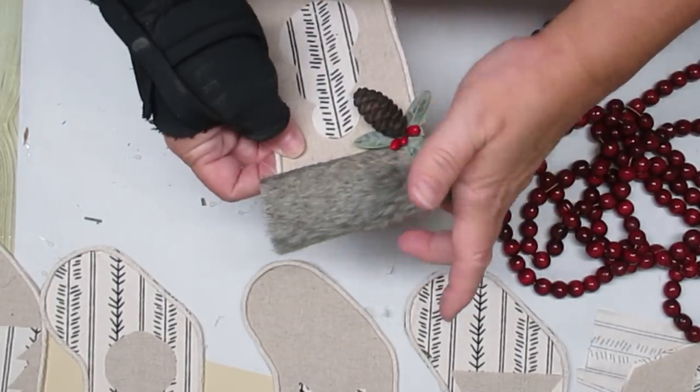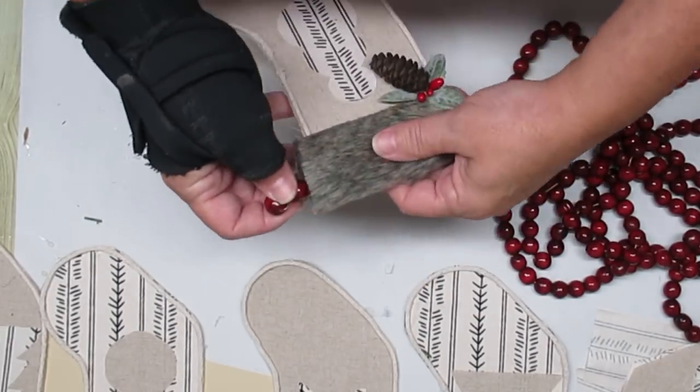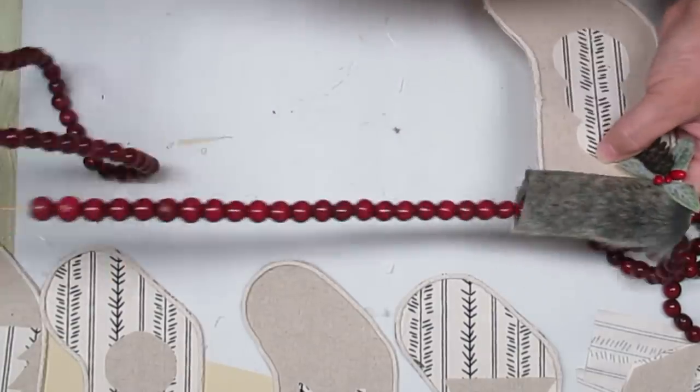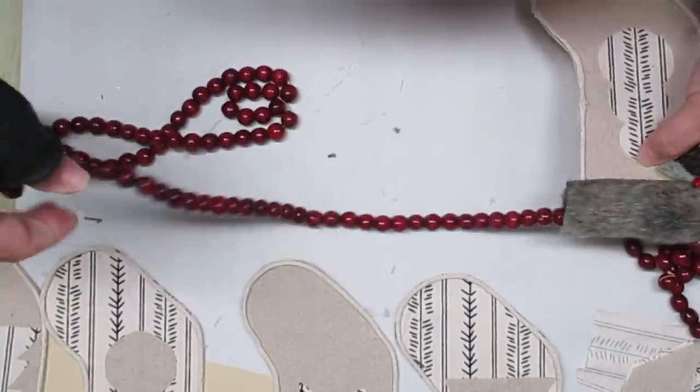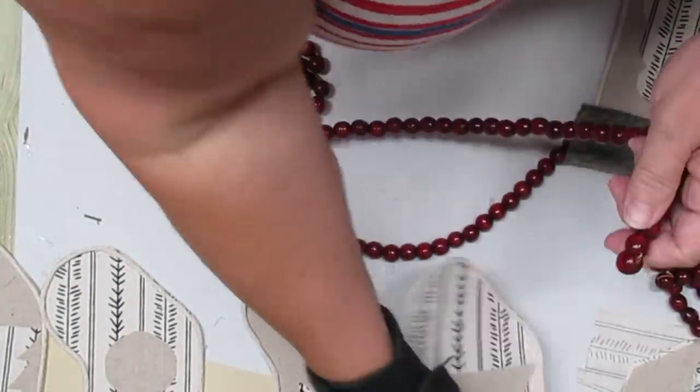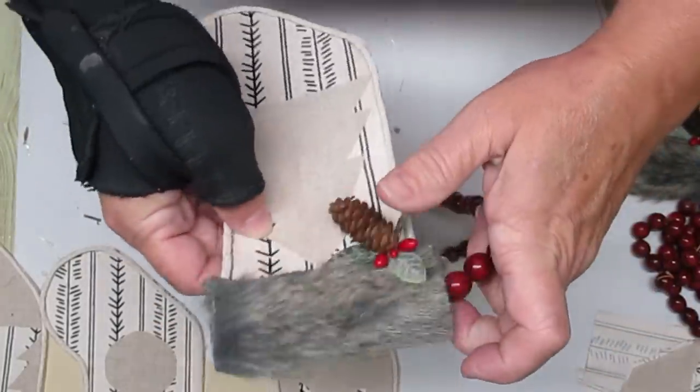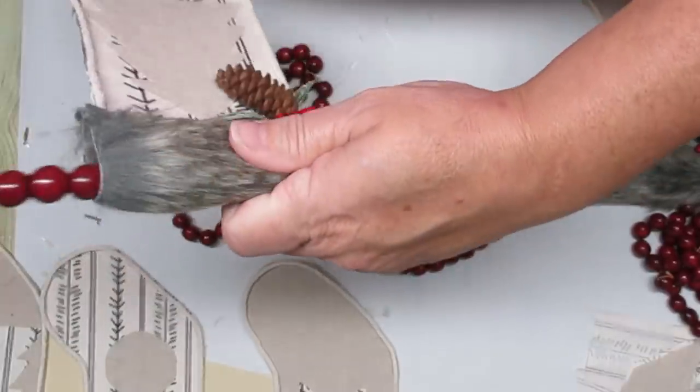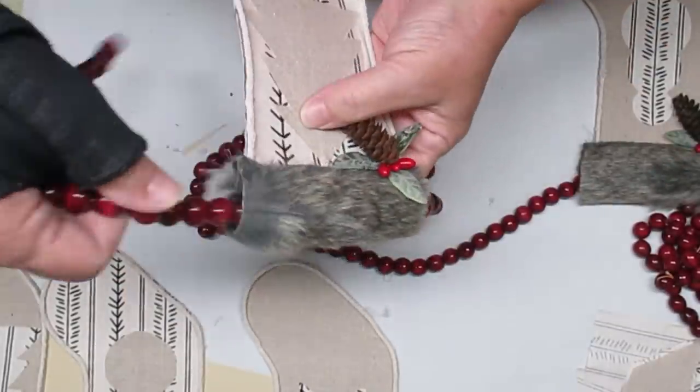Last year, I thrifted a huge bag of these red bead garlands. I think I've got six or seven of them and they're super long. So my idea was to pull this through the loop at the top of the stockings and use that as my garland string to hang the stockings. They turned out super cute. I hope you like them too.